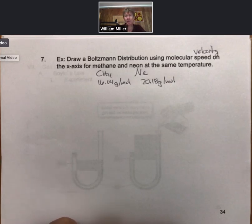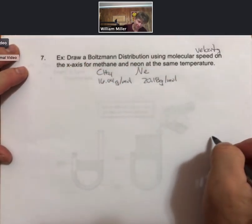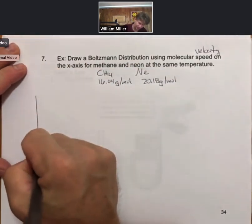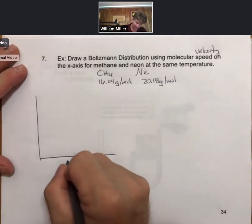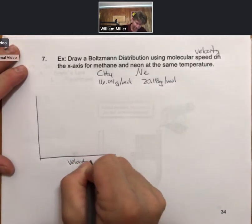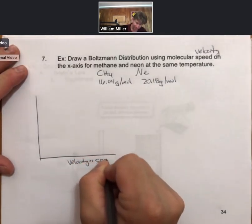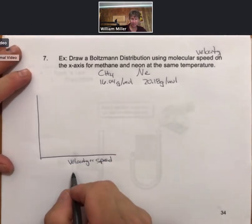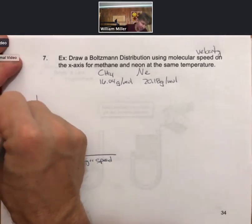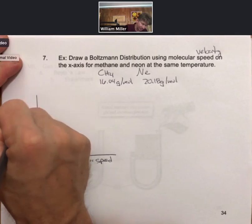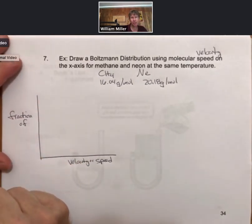So what we're going to do, and I'm going to save some space for a second example over here. So velocity or speed goes on the x-axis. Fraction of molecules goes on the y-axis.